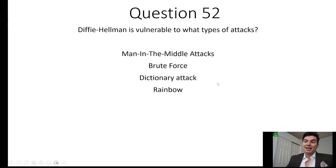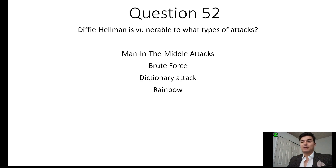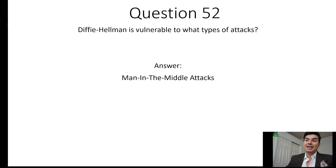A brute force attack is trying all different possible combinations of attacks. A dictionary attack is a type of brute force attack where they go through a list of common words, such as a dictionary. A rainbow table attack is when they're comparing a pre-computed list of hashes to a stolen database of hashed passwords. The answer to what Diffie-Hellman is vulnerable to is a man-in-the-middle attack.